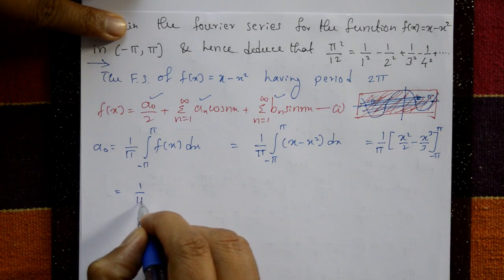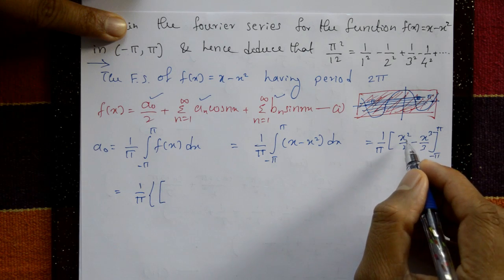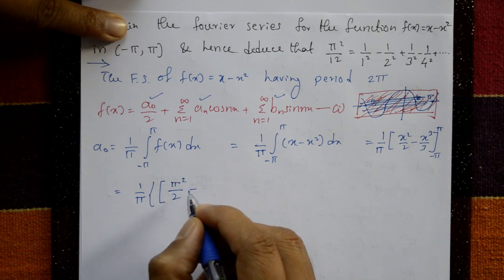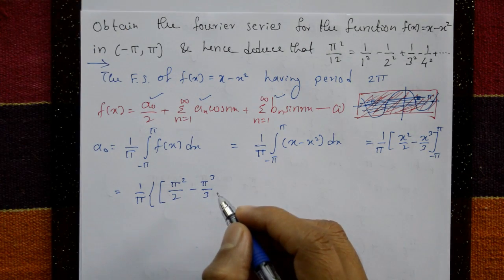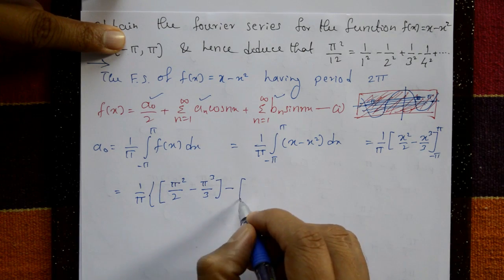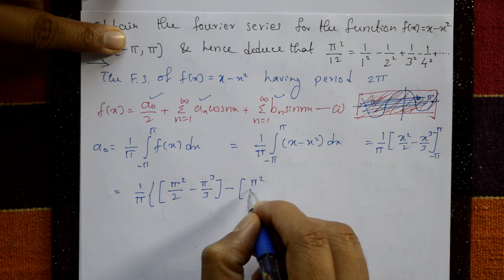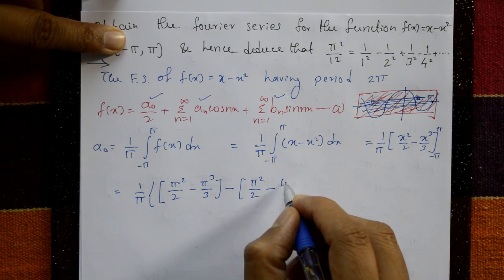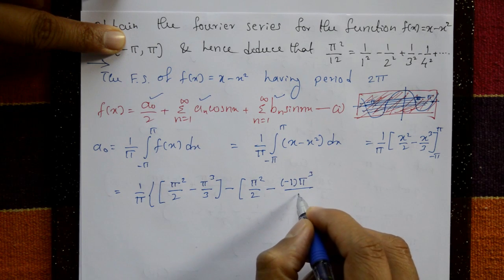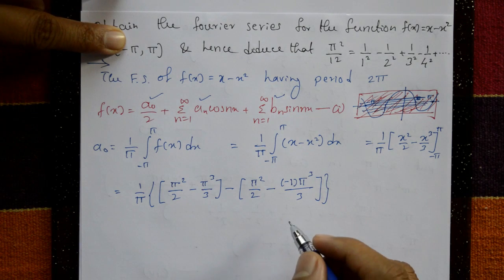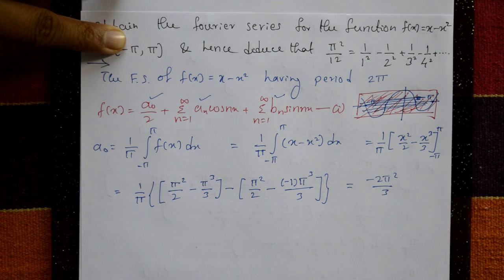Now (1/π): put the upper limit x = +π and lower limit x = -π. With the upper limit: π²/2 - π³/3. With the lower limit: π²/2 - (-π³/3), giving minus minus sign, so minus 1 into π³ divided by 3. Therefore a₀ = -2π²/3.